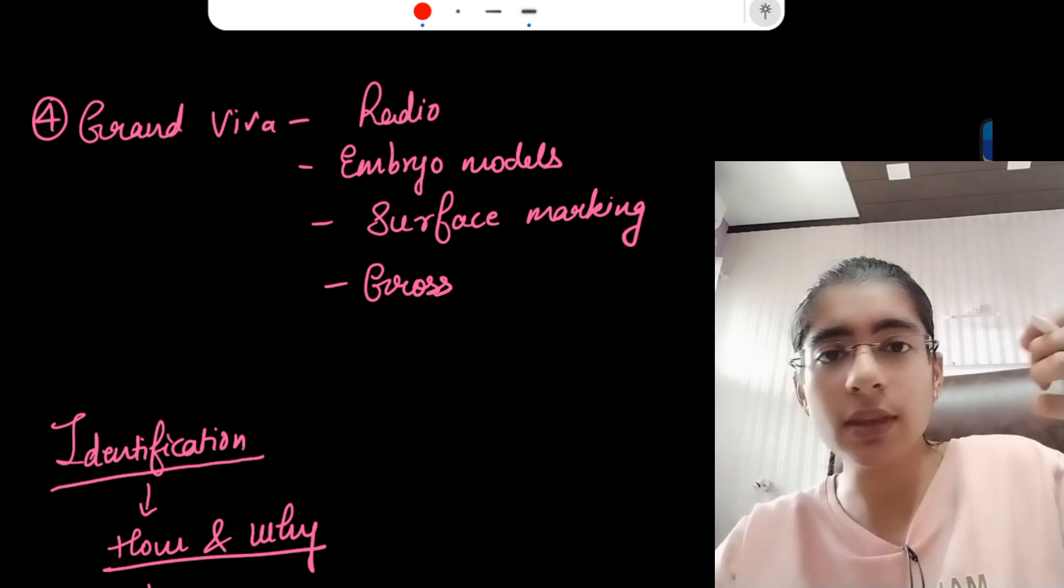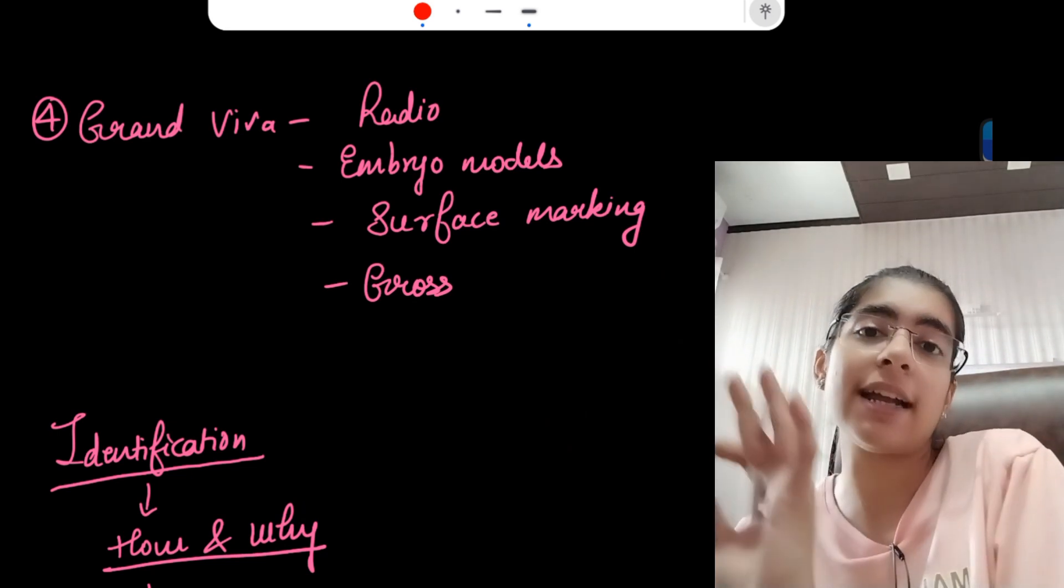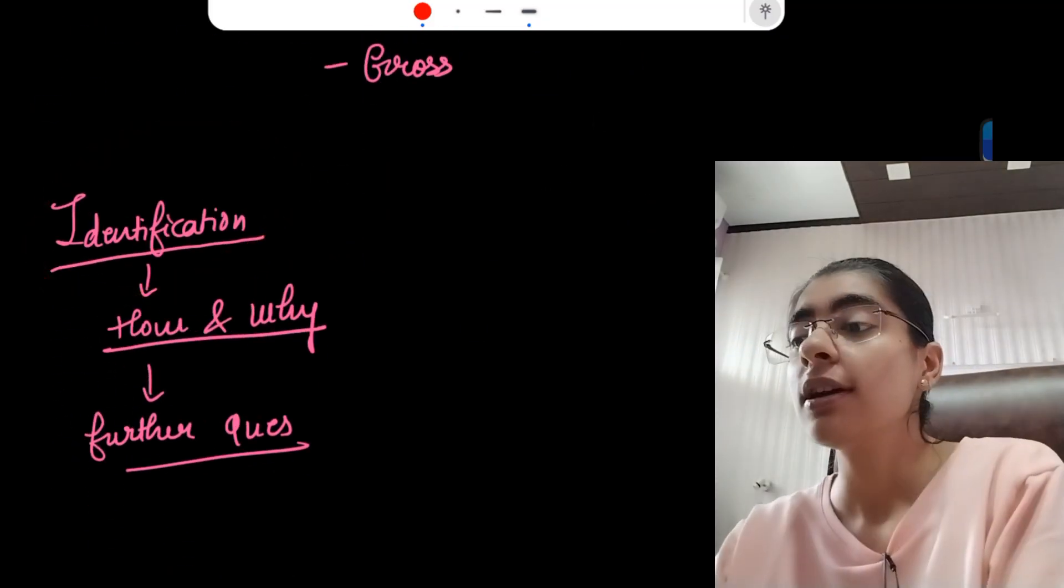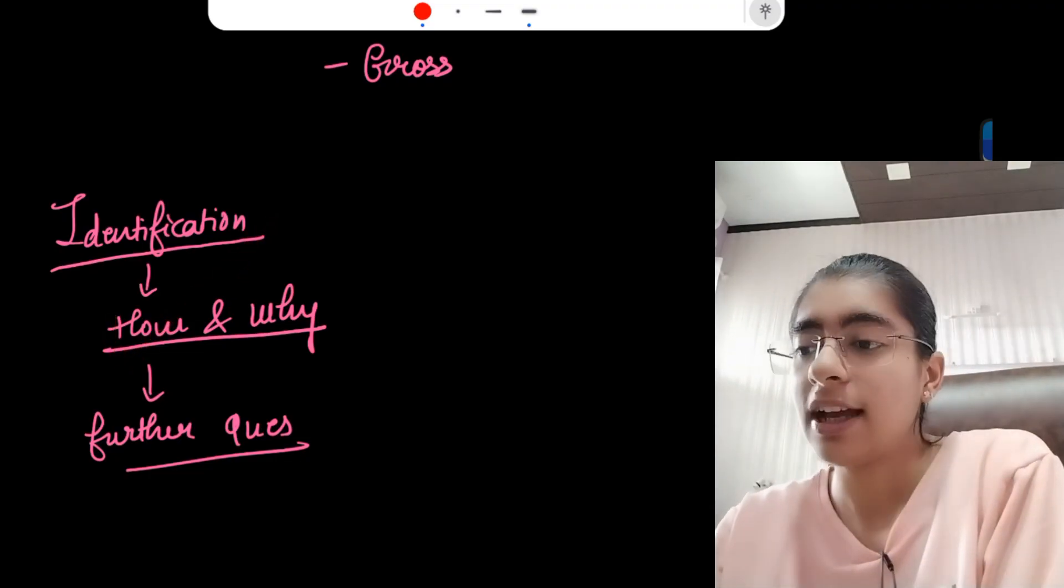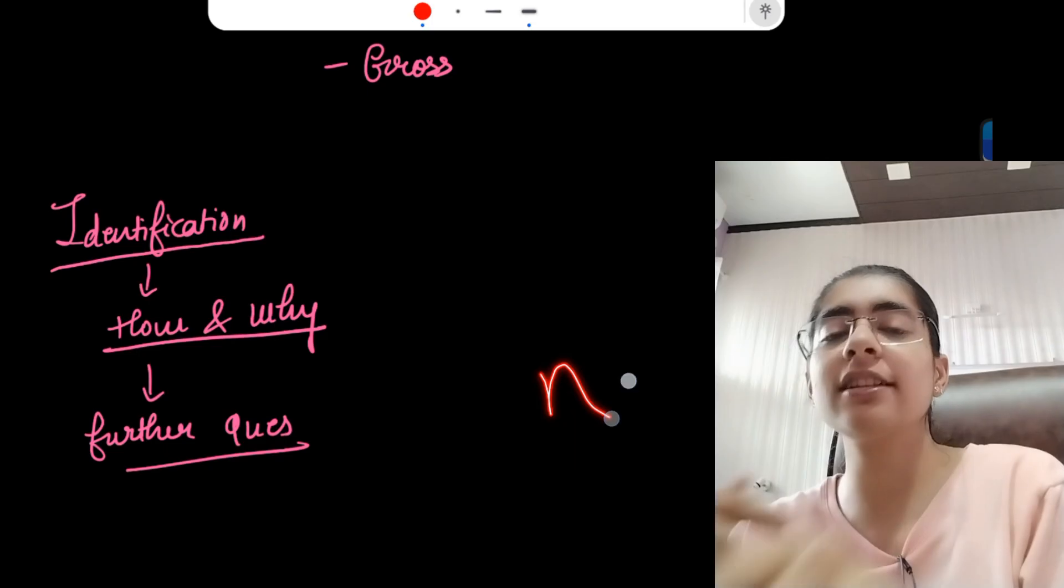If you can locate, like the external would just pick up a nerve or any artery, they will tell you what, identify it. First of all they will tell identify, then they will ask you how you identified, with the help of what structures, and why it is that.